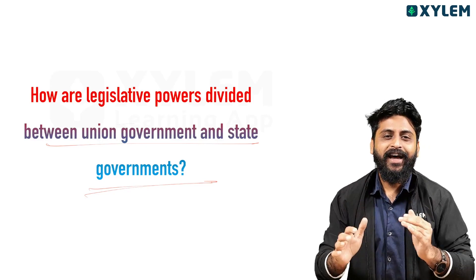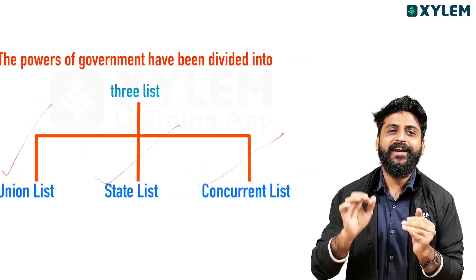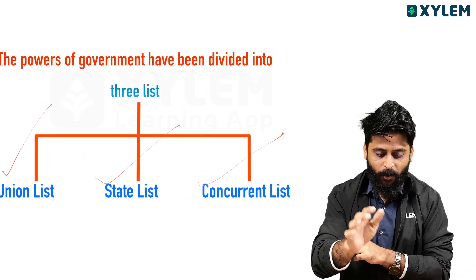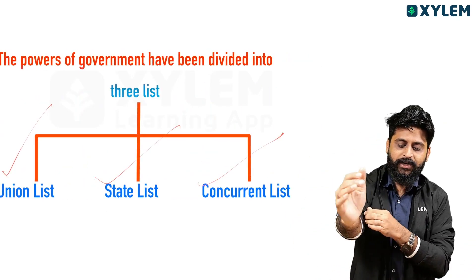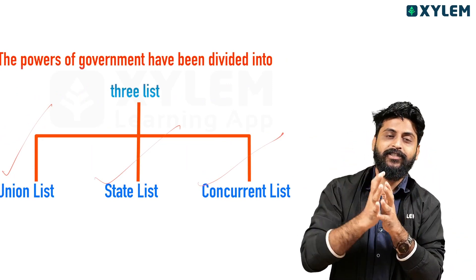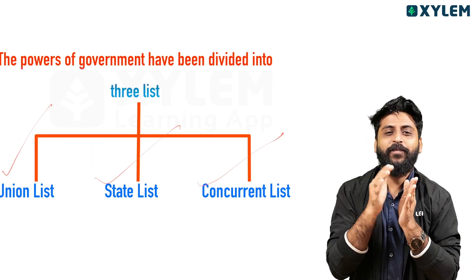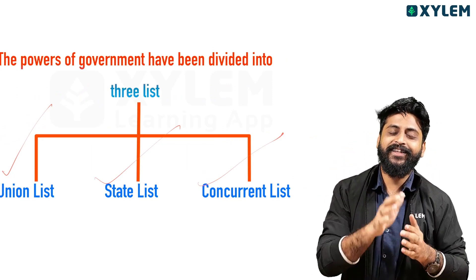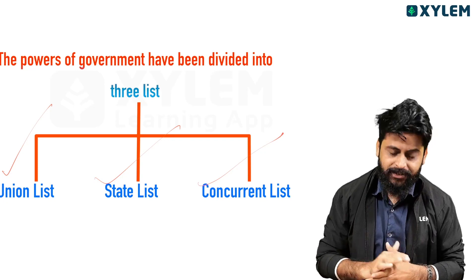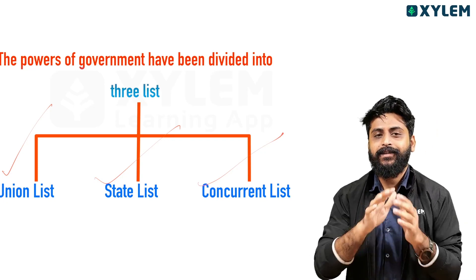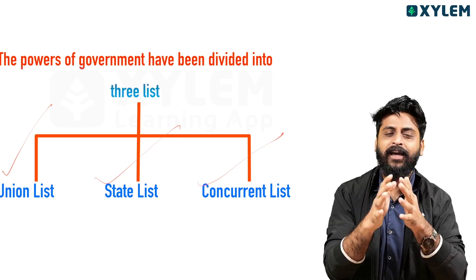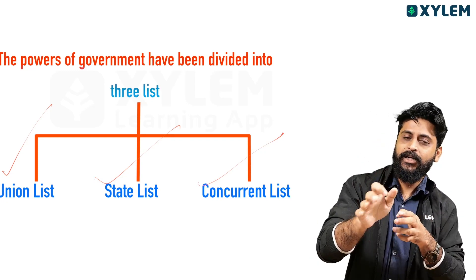Powers and government have been divided into three lists. The three lists are: Union list, state list, and the concurrent list.